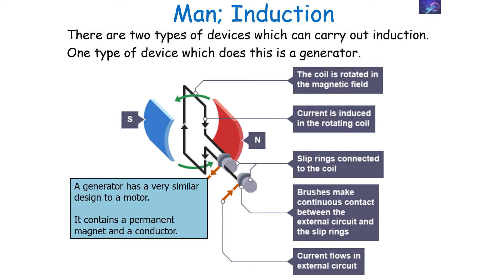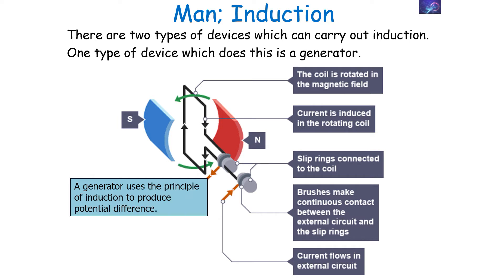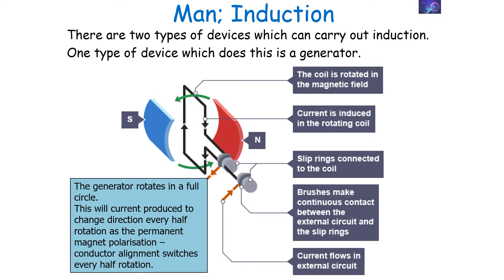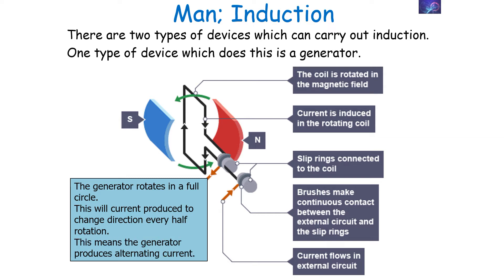It's important to note that a generator has a very similar design to a motor. It contains a permanent magnet and a conductor — a coil which is rotating. The generator uses the principle of induction to produce potential difference. The generator rotates in a full circle, which will generate a current that changes direction every half a rotation as the permanent magnet polarisation and the conductor alignment switches every half a rotation. This fundamentally means that a generator produces alternating current.